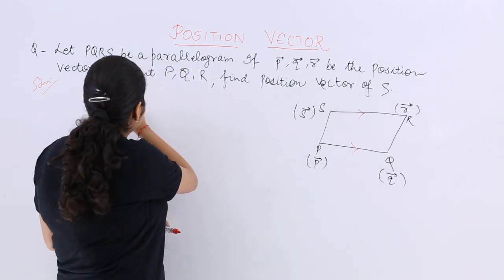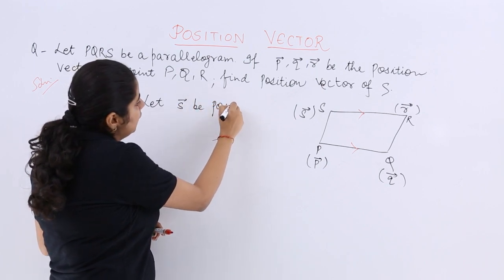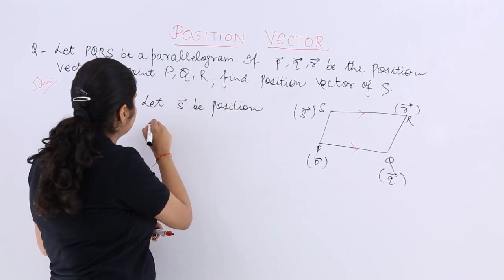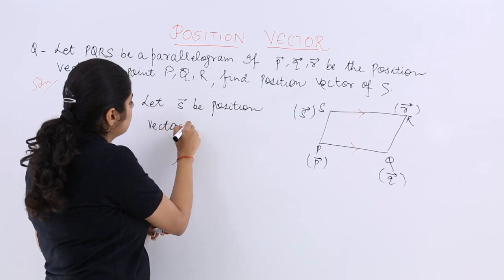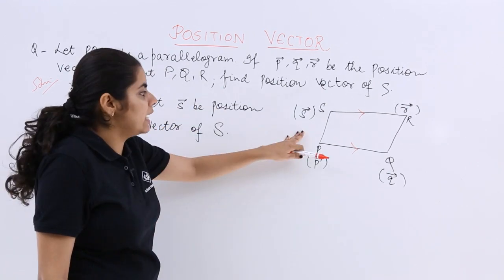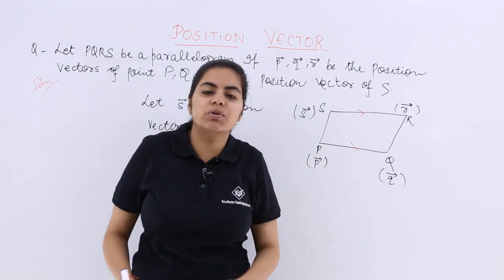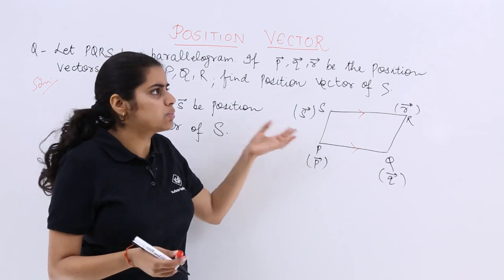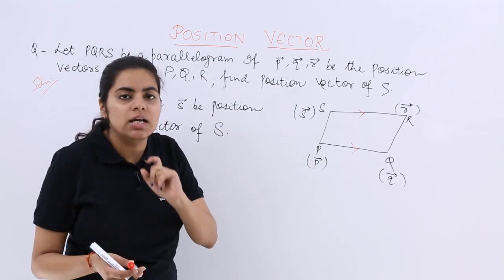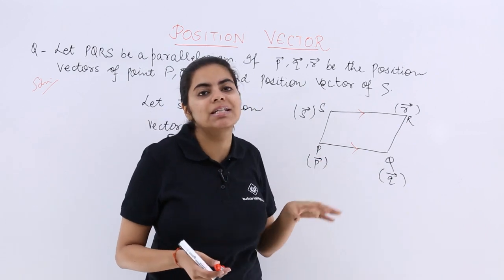Let small s be the position vector of capital S. However, we need to express s in terms of the given vectors p, q, and r.